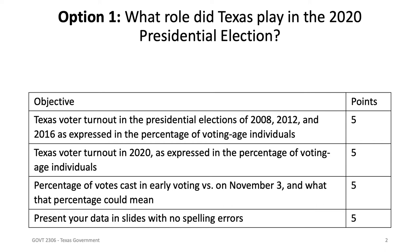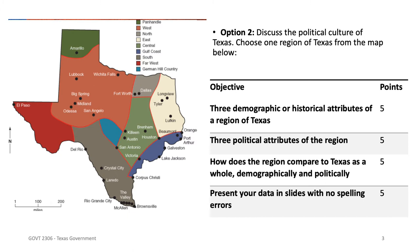If option one is not interesting to you, you always have option two. Option two: I want you to discuss the political culture of Texas. Choose one region from the map — it's really on the next few slides.